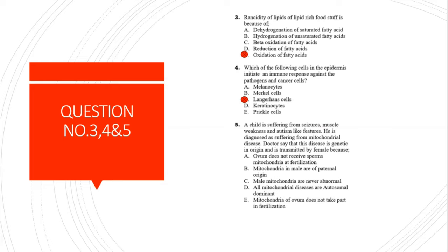Question 5: A child suffering from seizures, muscle weakness, and autism-like features is diagnosed with mitochondrial disease. The doctor says it is genetic in origin and transmitted by females. The correct answer is A - the zygote does not receive sperm mitochondria at fertilization. Mitochondria are maternal in origin, present only in the oocyte and not in sperm cells. That is why mitochondrial diseases are transmitted by females only.